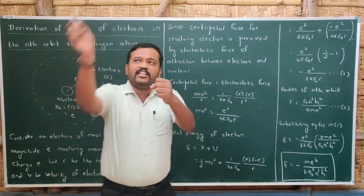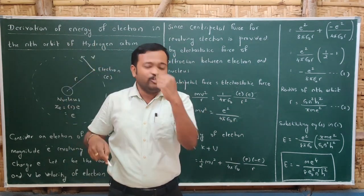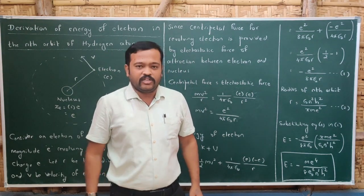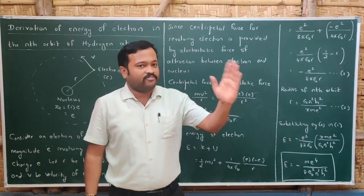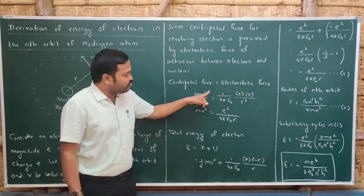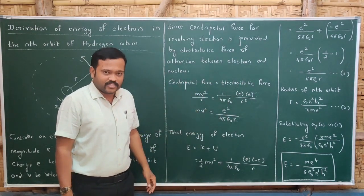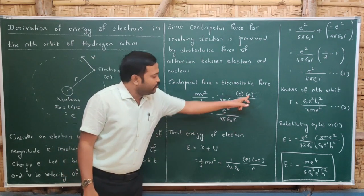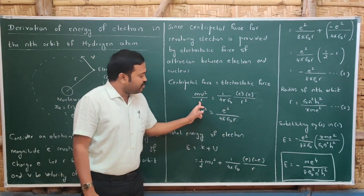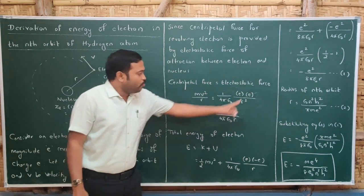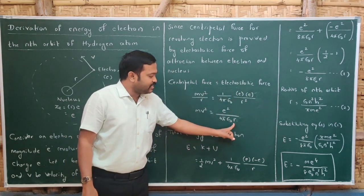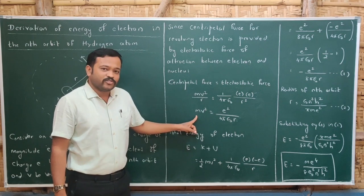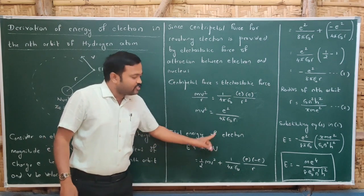One thing to remember is that when the electron is revolving around the nucleus, it has two kinds of energy: kinetic energy and potential energy. The formula for kinetic energy is ½mv². Keeping ½mv² and transferring terms, we get mv² = e²/(4πε₀r). So after one r cancels, we obtain the expression for mv².